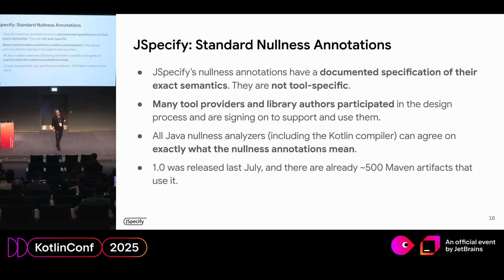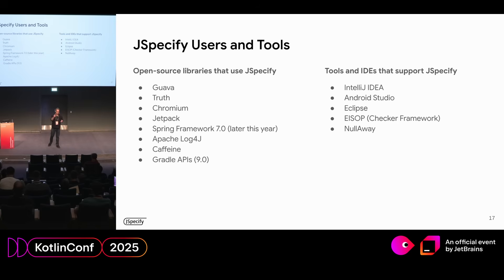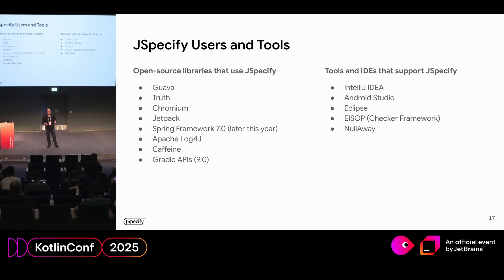We released 1.0 last July. There are already around 500 Maven artifacts that use it. Libraries and tools that have already committed to using it or are using it include Guava, Truth, Chromium, and Jetpack. The next major version of Spring is going to switch from their bespoke nullness annotations to JSpecify's. IntelliJ, Android Studio, and Eclipse all recognize JSpecify annotations. ESOP, a fork of the Checker Framework, recognizes it. NullAway and more as well.